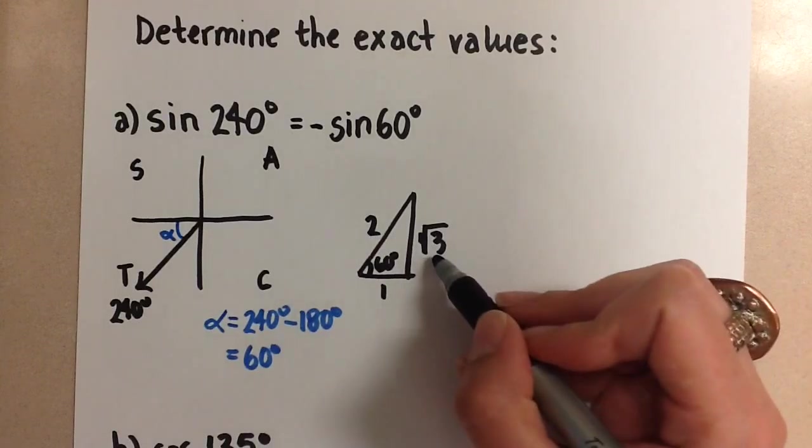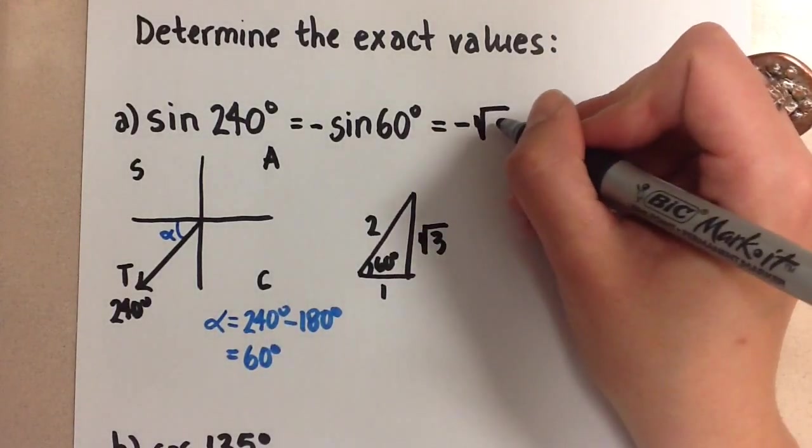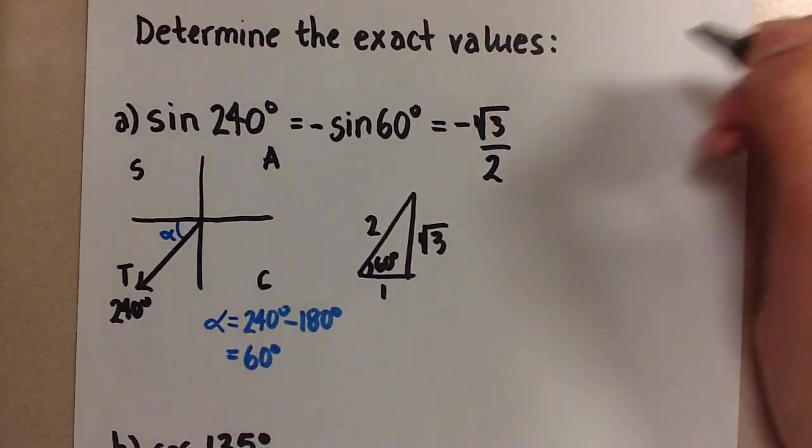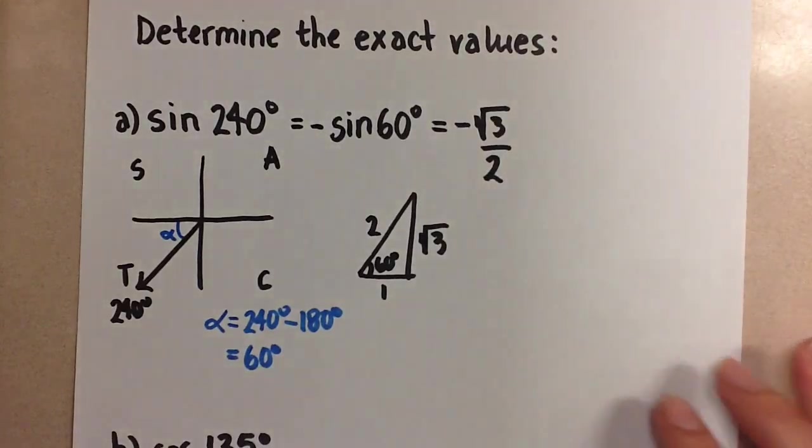So that's root 3 over 2, and our final answer then is negative root 3 over 2 for sine of 240 degrees.